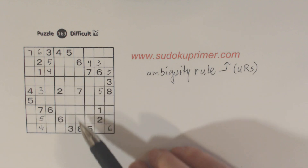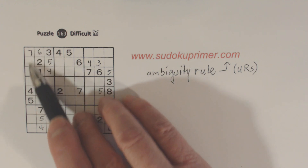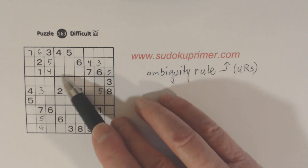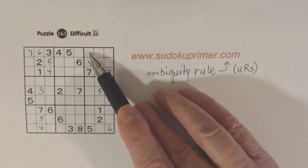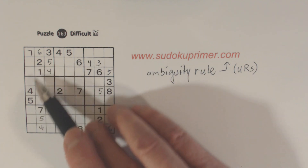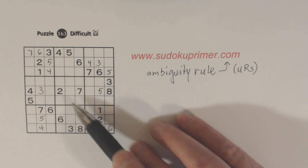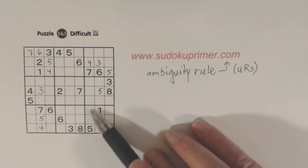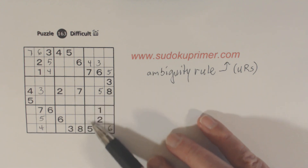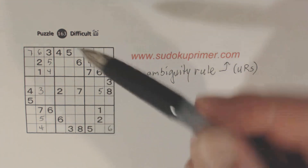Now eights: there are only two numbers missing in this box — eight and nine — so those are eights right there. With ghost eights and an eight here, we know that's an eight. We can also see these were ghost threes earlier, and now they're ghost eights also, so we have three-eight twins. With the ghost eights here and an eight here, we know that's an eight right there.